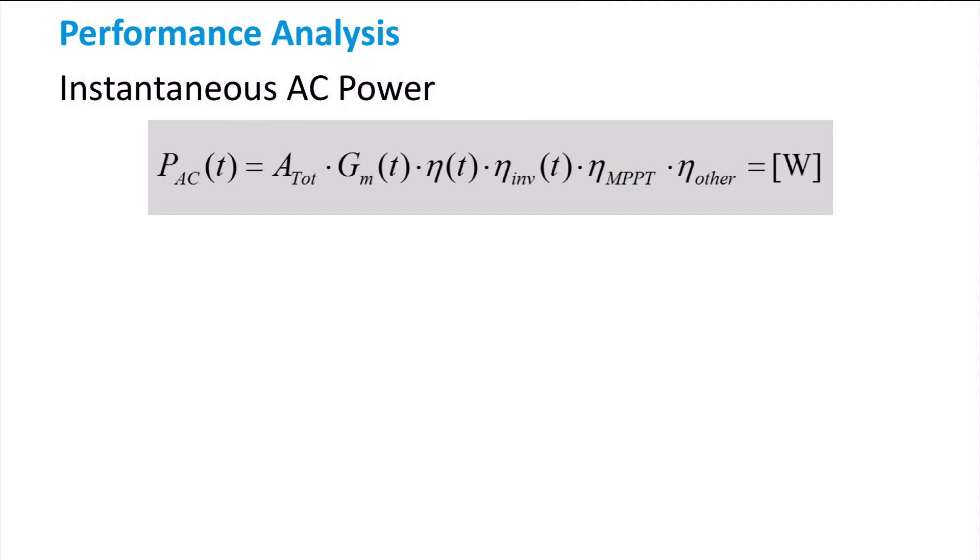Those are the PV module efficiency, inverter efficiency, maximum power point tracker efficiency and other efficiencies. Generally, a fixed MPPT efficiency of around 98% is used.